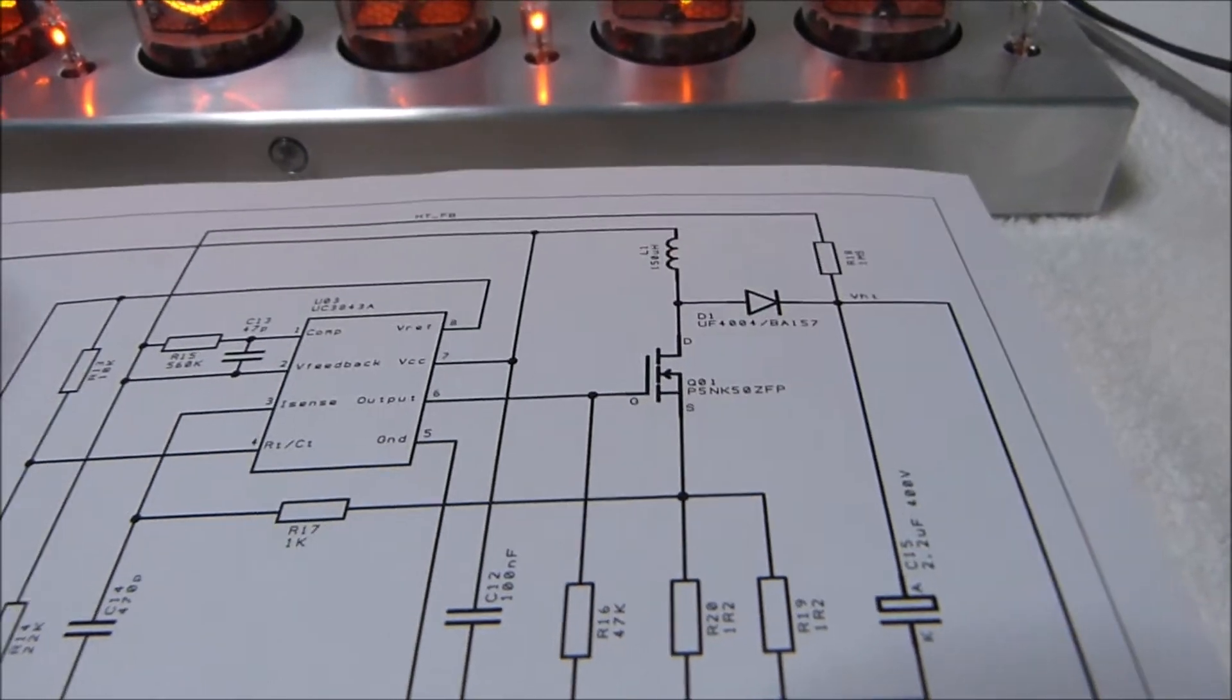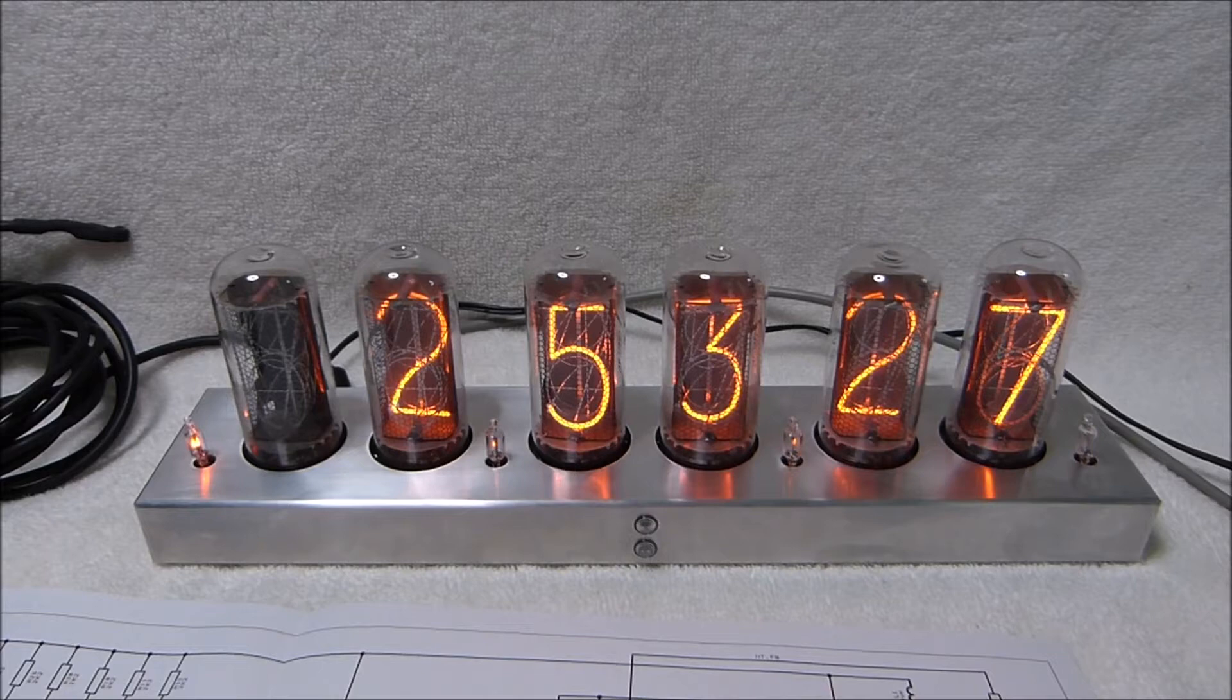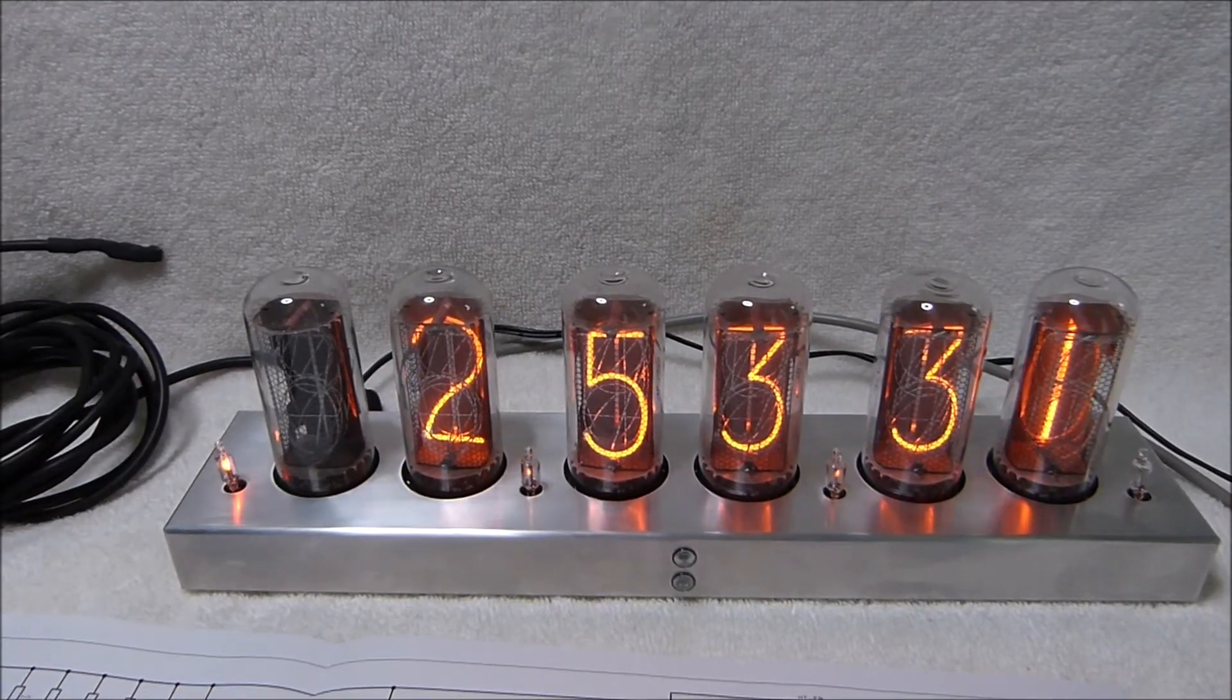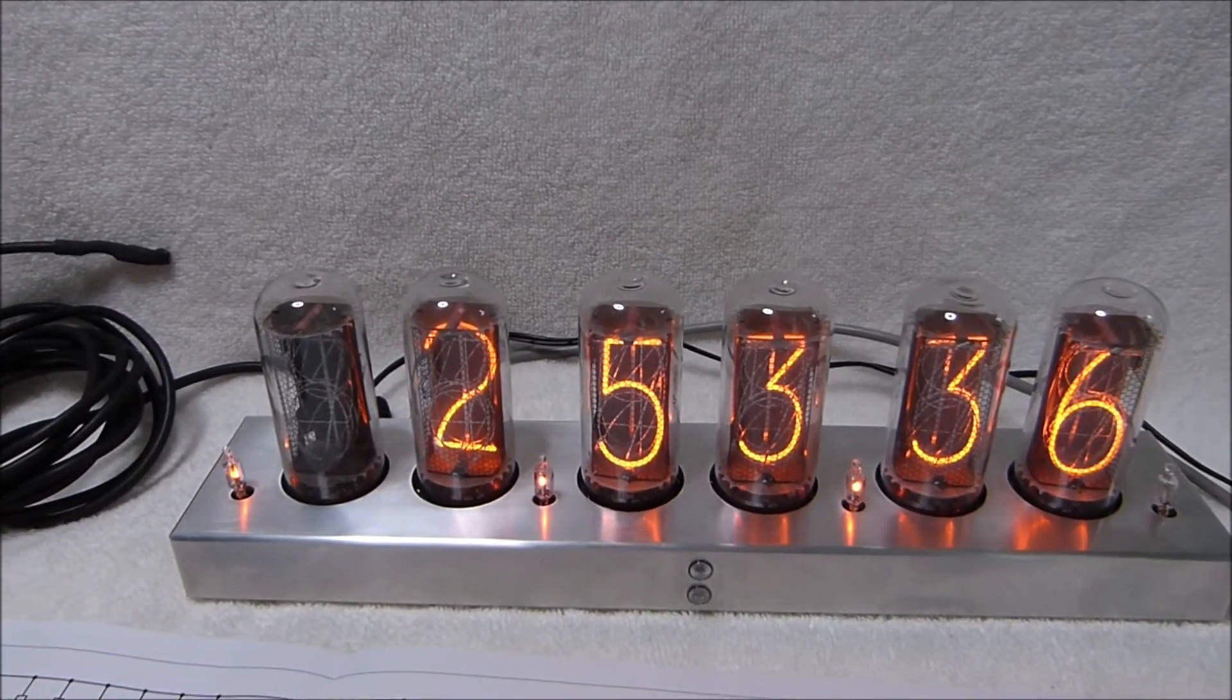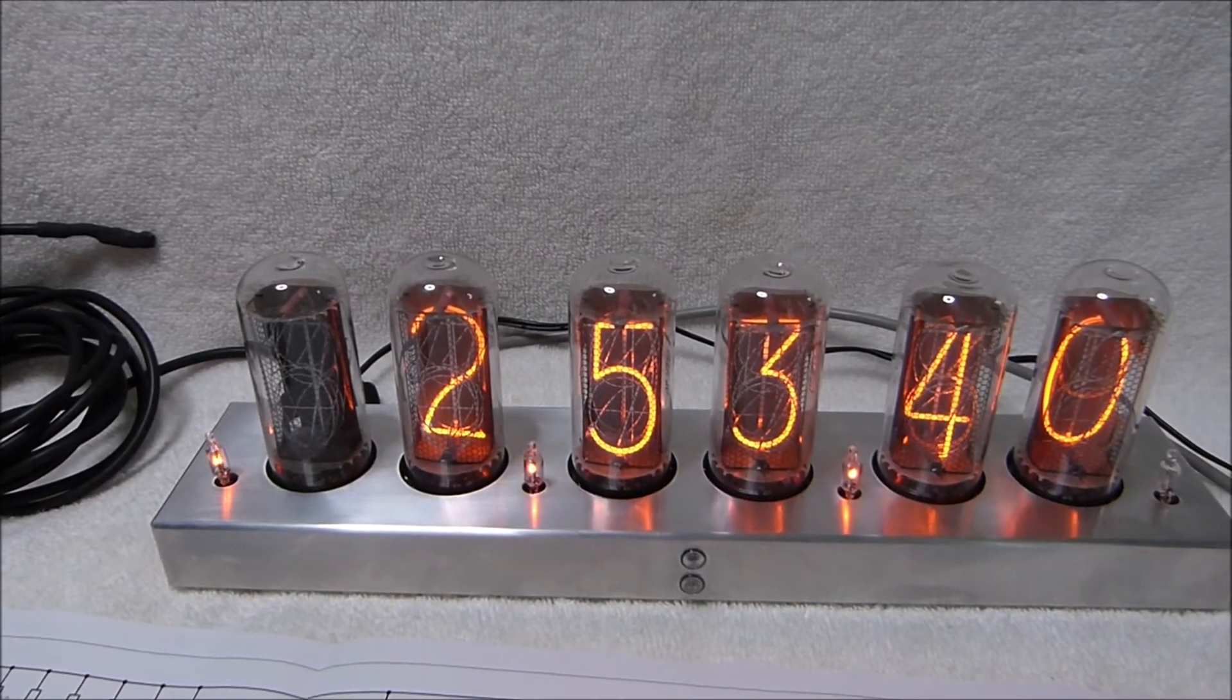In the interest of not having to potentially repeatedly take the clock all the way apart to change the resistor out, I added a 100 kilo ohm potentiometer in series with the 1.5 mega ohm resistor, so that the combined resistance could be adjusted between 1.5 and 1.6 mega ohms. I calculated that this would give me an adjustment range between 170 and 182 volts.